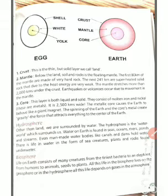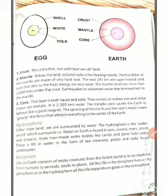The core is both liquid and solid. It consists of molten iron and nickel. It is 2,500 km wide. The metallic core causes the Earth to behave like a giant magnet.